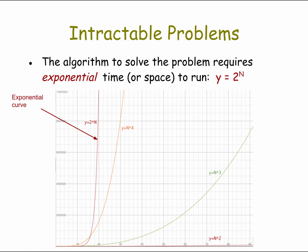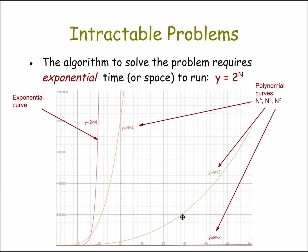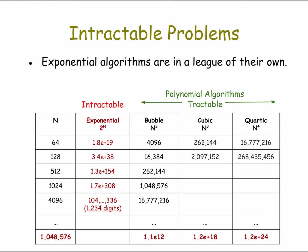Here are some graphs showing the difference between an exponential curve, which starts out fairly flat and then grows extremely fast, compared to polynomial curves for n squared, n cubed, and n to the fourth. As you can see, the exponential curve grows much faster than the quadratic curve. Remember, n squared was our characterization for the bubble sort algorithm. In this graph, the y-axis has very large numbers, so the quadratic looks almost flat compared to the exponential curve.